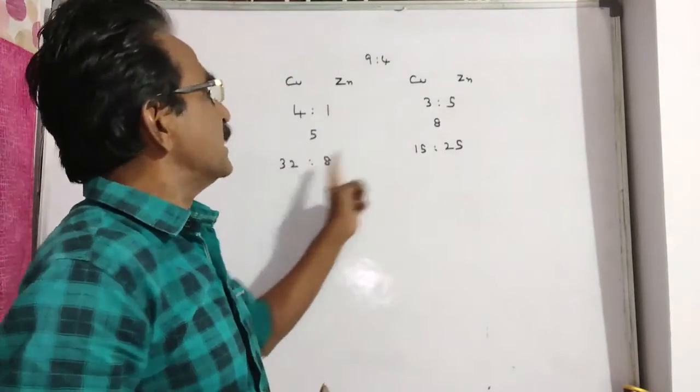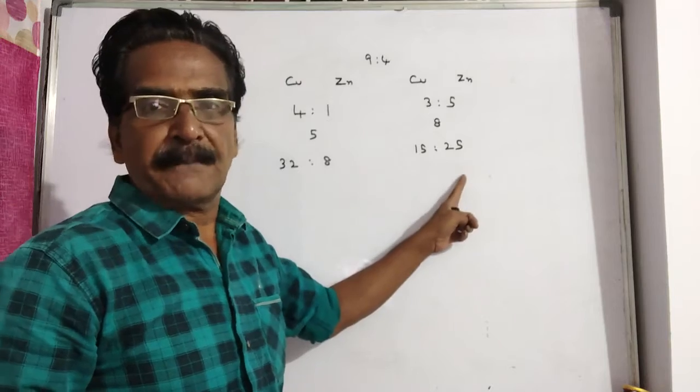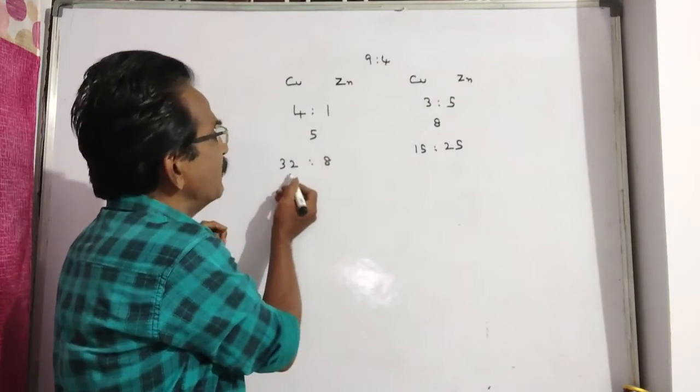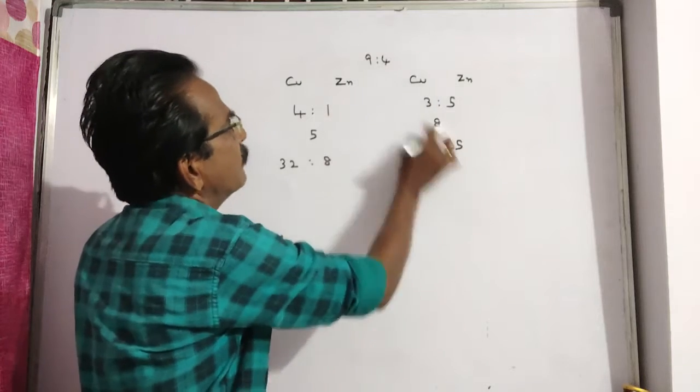After that, these two alloys are mixed in the ratio 9 is to 4. So multiply this with 9, multiply this with 4.